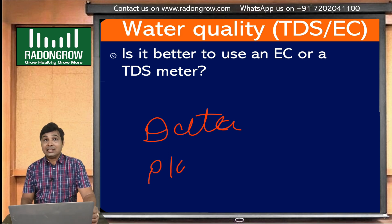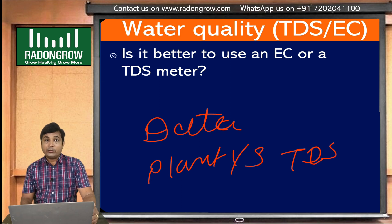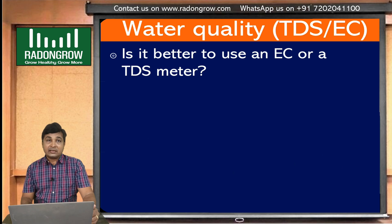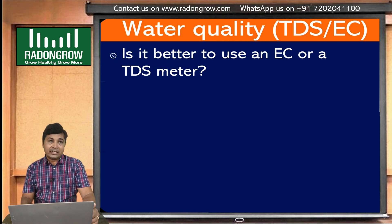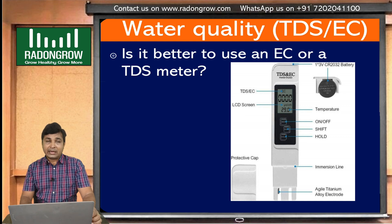Many people ask which is better to use — EC or TDS. That depends on your nutrient provider or your formulation. Check your nutrient supplier's instructions: if they instruct you to check EC, then check EC; if they instruct you to check TDS, then check TDS. A small EC meter or TDS meter is available in the market that you can use to check TDS or EC.